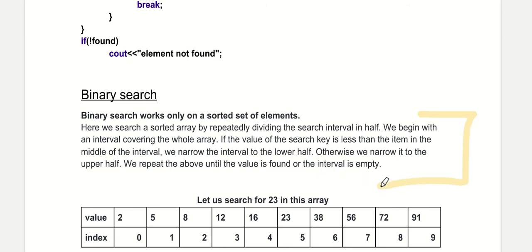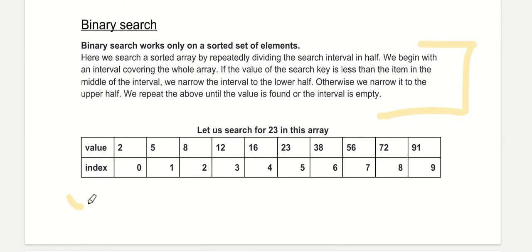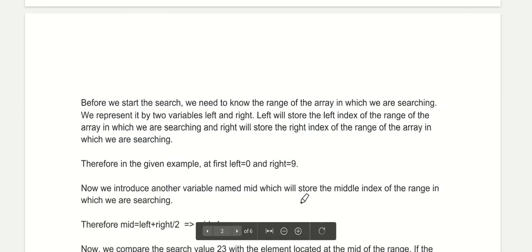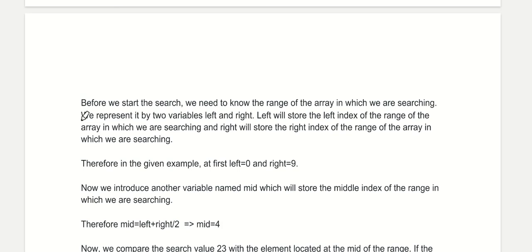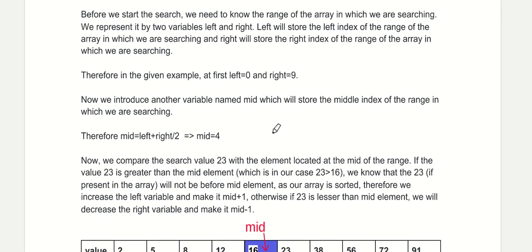Let us understand what this means. Assume we have been given an array and we have to find if element 23 is present or not. Binary search always works in a range of the array, so before we start the search we need to know the range. We represent it by two variables, left and right. Left stores the left index and right stores the right index. At first, left will be 0 and right will be 9.